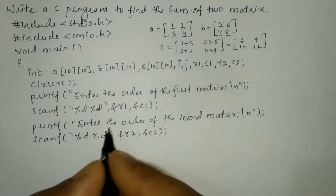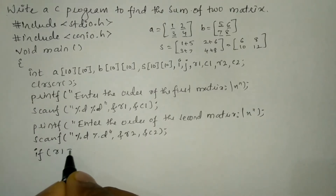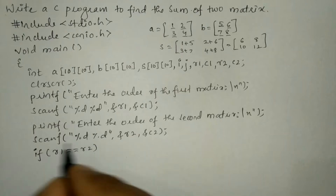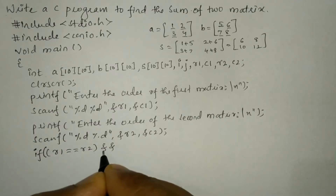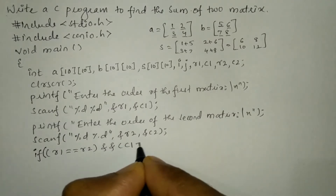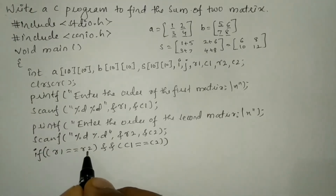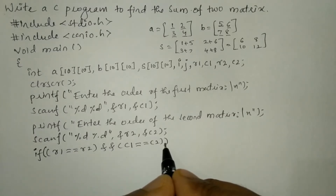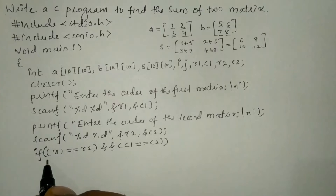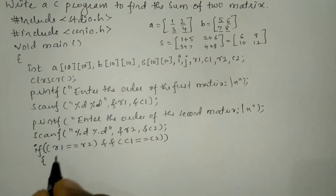So we have to check this condition after receiving the order of first and second matrix. I'm going to write: if R1 == R2 and C1 == C2. If the row of the first matrix equals the row of the second matrix, and the column of the first matrix equals the column of the second matrix, then only the addition of two matrices is possible. So I'm going to write a curly open brace and if this condition is true, we'll proceed.